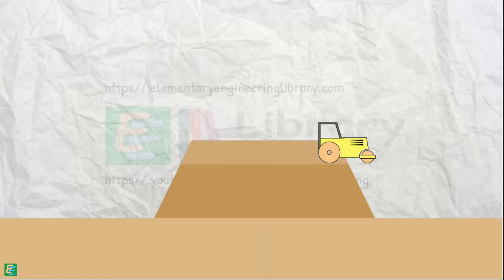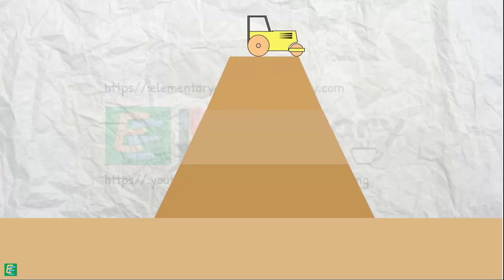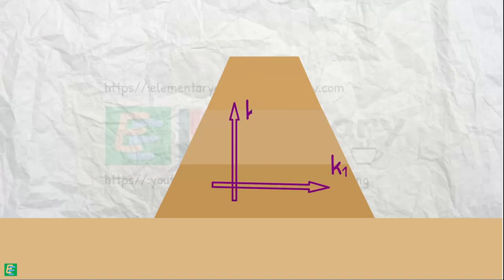In an earth dam embankment, soil has been compacted in layers. There is always some difference in permeability in horizontal and vertical directions.